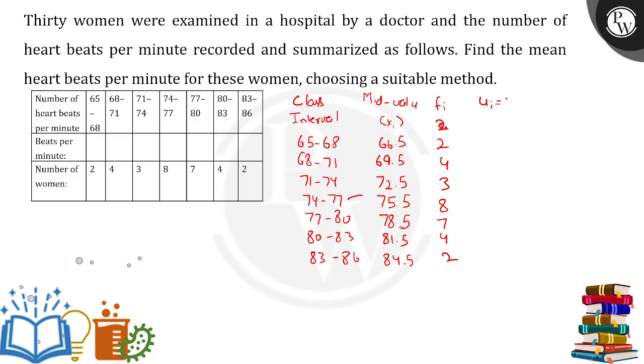Yi equals Xi, that means whatever the mid-value we have found out, minus 75.5, that means exactly in between, lying exactly in between, divided by 3 over here. So this calculation needs to be done. This will come out to be minus 3, for this minus 2, for this minus 1, 0, 1, 2 and 3. So these are the calculations done.